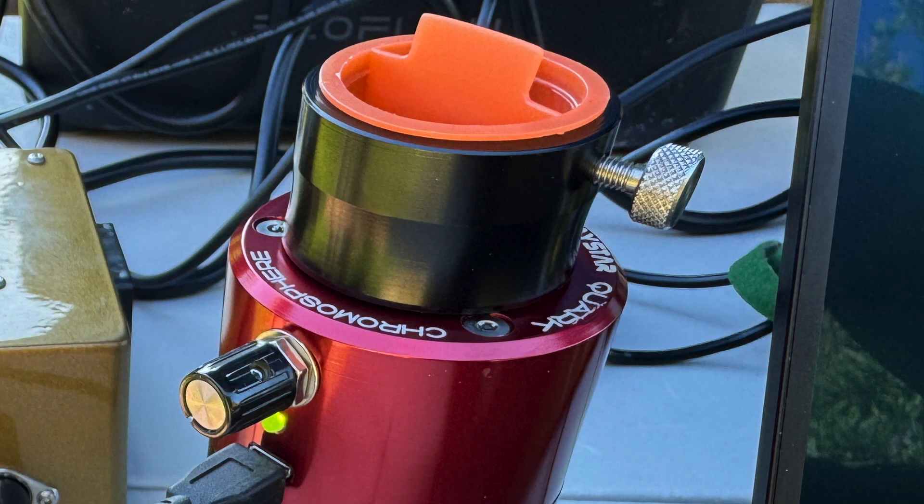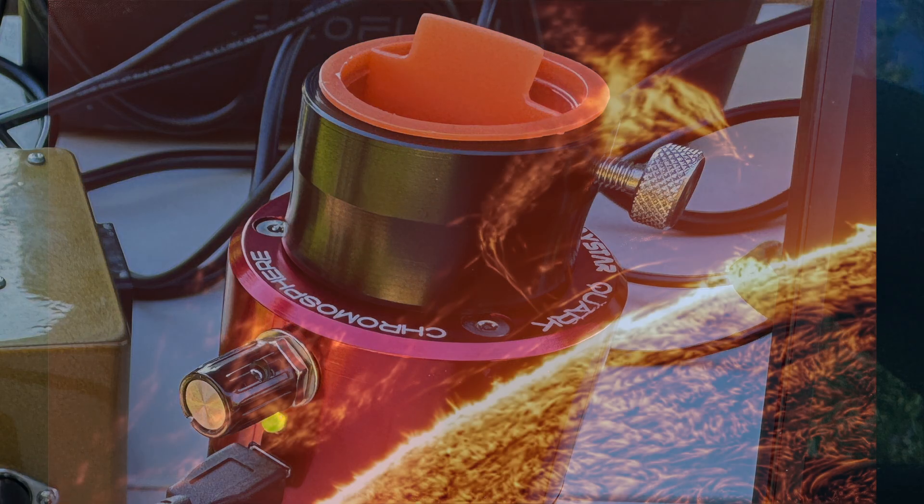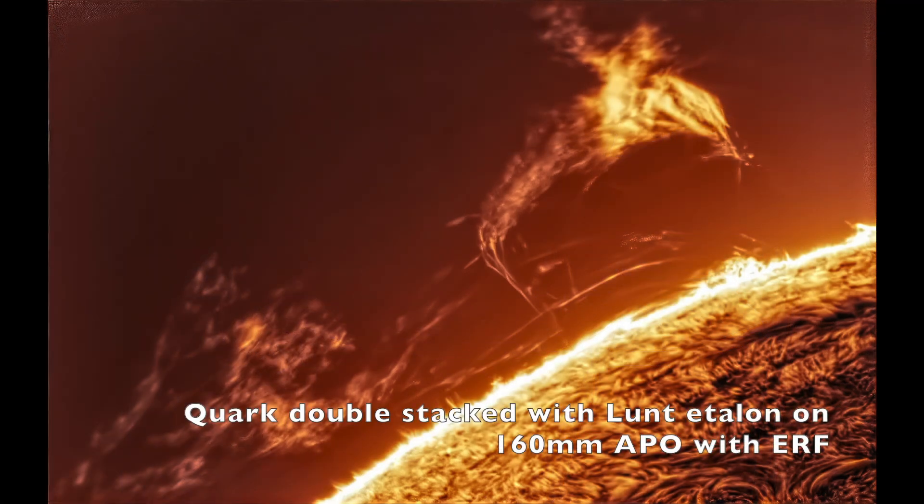The unit I'm looking at in this review is a Quark Chromosphere. Both systems rely on solid mica Fabry-Perot etalons to achieve the narrow bandpasses required for chromospheric viewing.